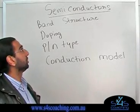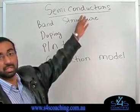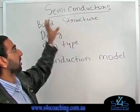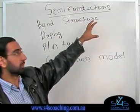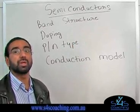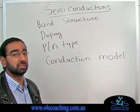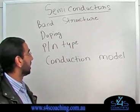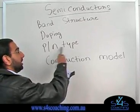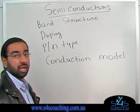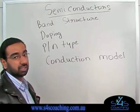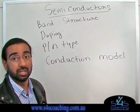Hi, today we're going to be looking at semiconductors, and I'm going to start off by talking about the band structure. I'm going to talk about what doping is and how doping can be used to improve the conductance of semiconductors. I'm going to have a look at the two types of semiconductors, the P-type and the N-type, and then I'm going to have a look at the conduction model of semiconductors and how they actually conduct.